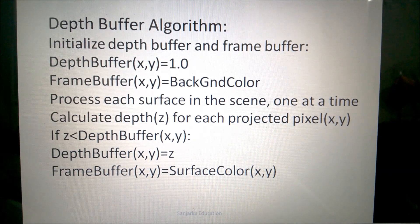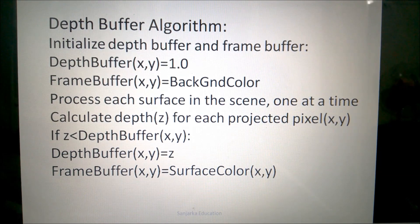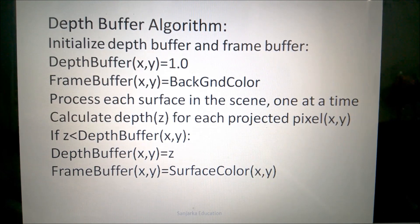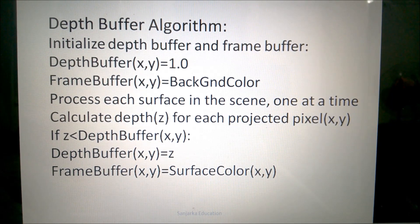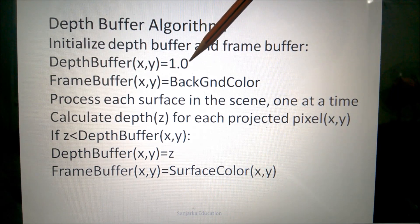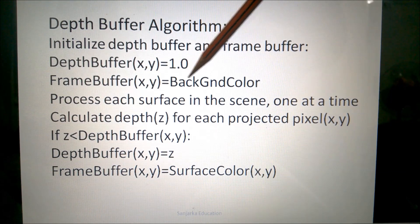Now we come to the depth buffer algorithm. One important thing to mention: distances are measured in normalized coordinates, meaning the maximum distance is 1, and the minimum distance — where the view plane is placed — is 0. In the algorithm, we first initialize the depth buffer and the frame buffer. The depth buffer for all pixels is initialized with the maximum distance, and the frame buffer for all pixels on the view plane is initialized with the background color.